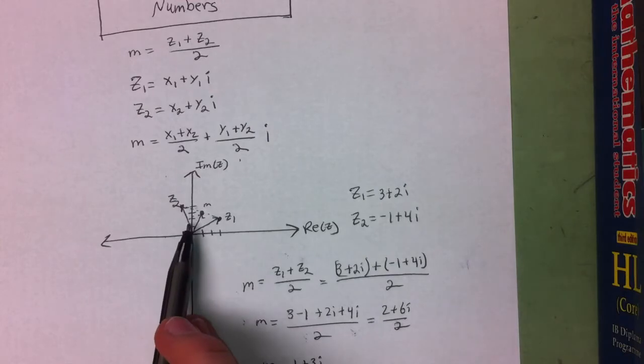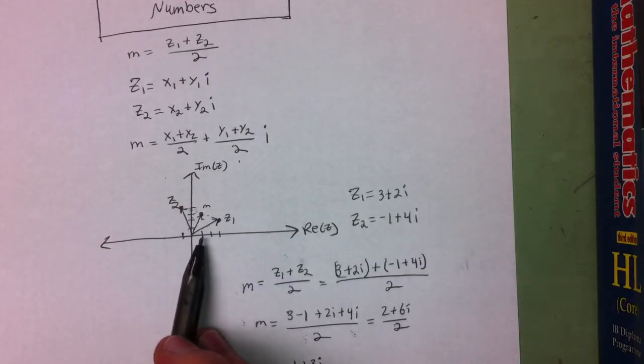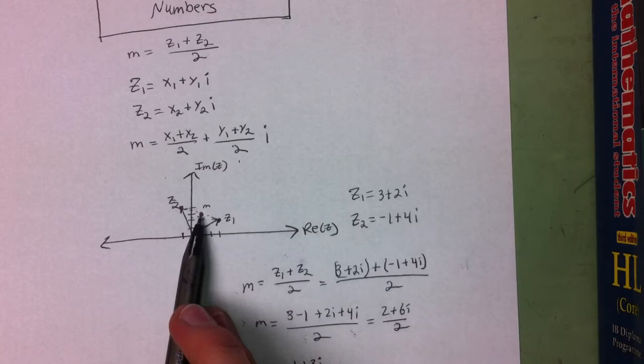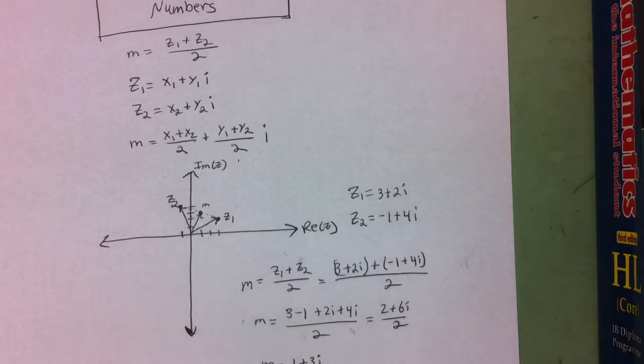And if we want to look at this graphically, we can see that 1 plus 3i is where the midpoint lies between these two complex numbers.